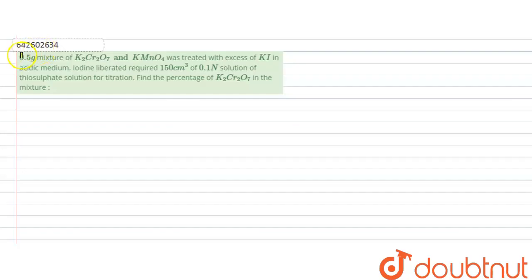The question is: a 0.5 gram mixture of K₂Cr₂O₇ and KMnO₄ was treated with excess of KI in acidic medium. The iodine liberated required 150 cm³ of 0.1 normal solution of sodium thiosulfate for titration. Find the percentage of K₂Cr₂O₇ in the mixture.